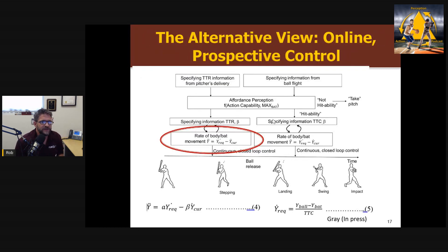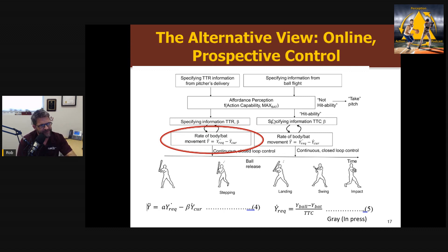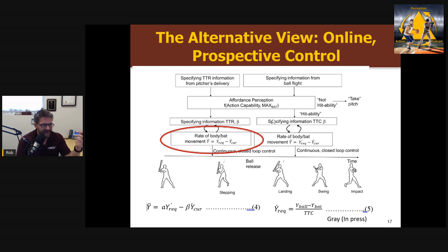The alternative to predictive control is online prospective control, where I couple my movement directly to the information. I'll go into more detail in my upcoming paper, but the real strength here is that it actually specifies what's happening with the movement and how it relates to information. You're controlling the acceleration and forward movement of the bat and body based on the information — there are laws and predictive rules, not just a vague instruction to 'move' after receiving a prediction from some black box.